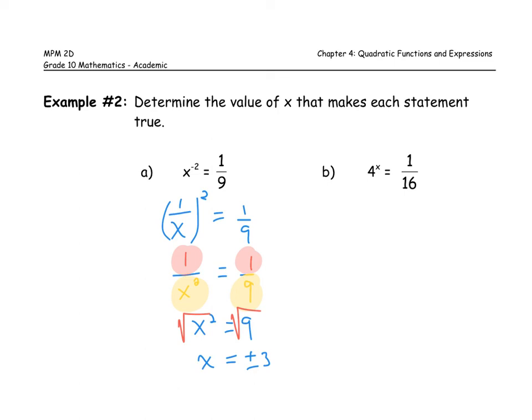Now example B: instead of the base being a variable, here the exponent is the variable. I have four to the power of x on the left. I can't really do anything with that, so I want to transform one over sixteen by writing it as an expression with an exponent. I'll write sixteen as sixteen to the power of negative one.